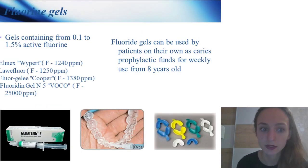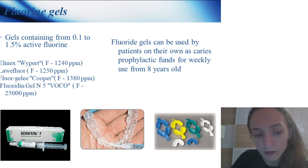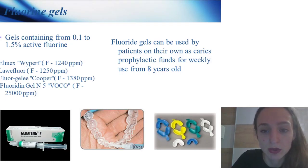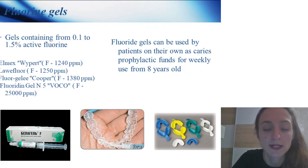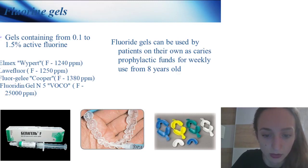Fluorine gels: gel can contain from 0.1% to 1.5% active fluorine. Examples include Elmex, Aloe Floor, and Fluor Gel Copper. These gels can be used by patients for caries prevention on a weekly basis and can be used from 8 years old.